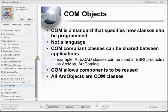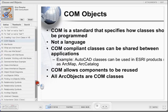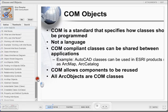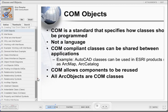COM objects deserve special mention in this course, as the ArcObjects programming libraries are built using the COM protocol. COM is not a programming language, but rather a standard that specifies how classes should be programmed. The benefits of developing COM-compliant classes include component reuse and sharing of classes between applications. For instance, since ESRI's ArcObjects classes are COM-compliant, they could be used in AutoCAD or Microsoft Word applications.